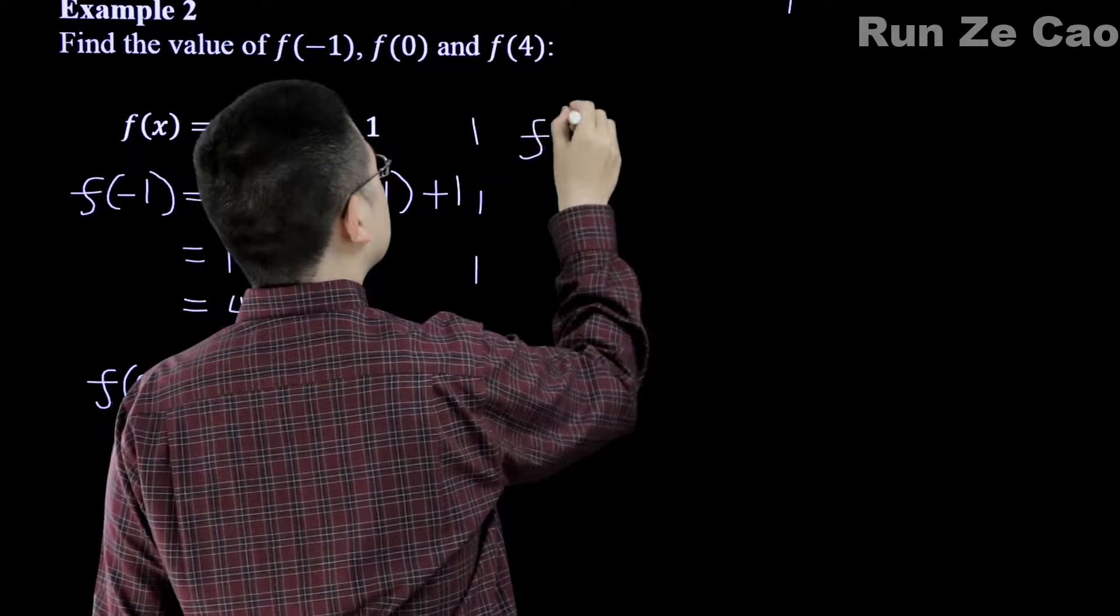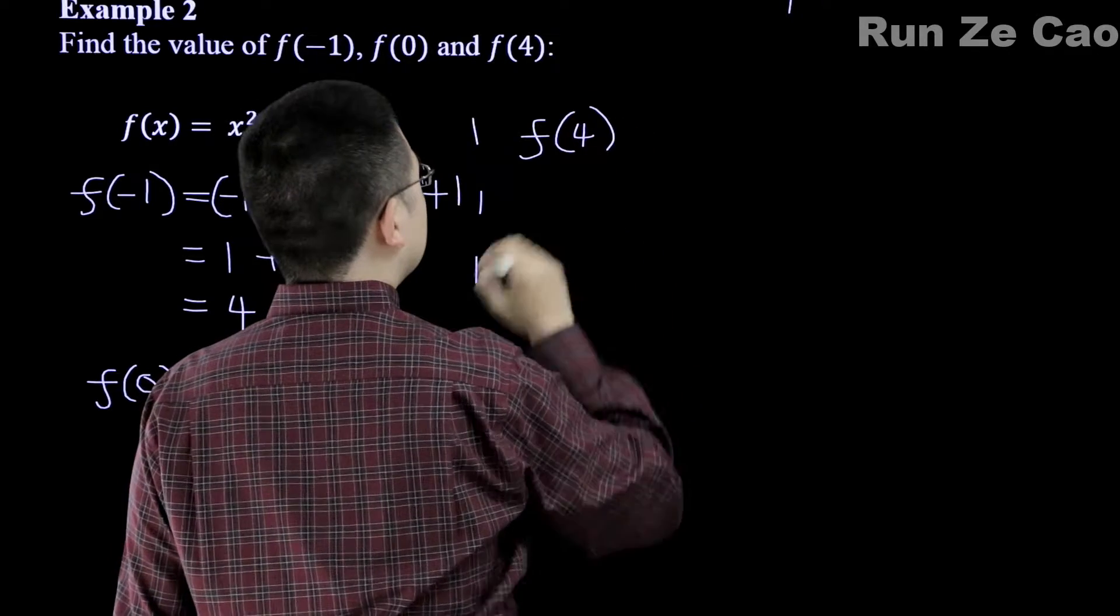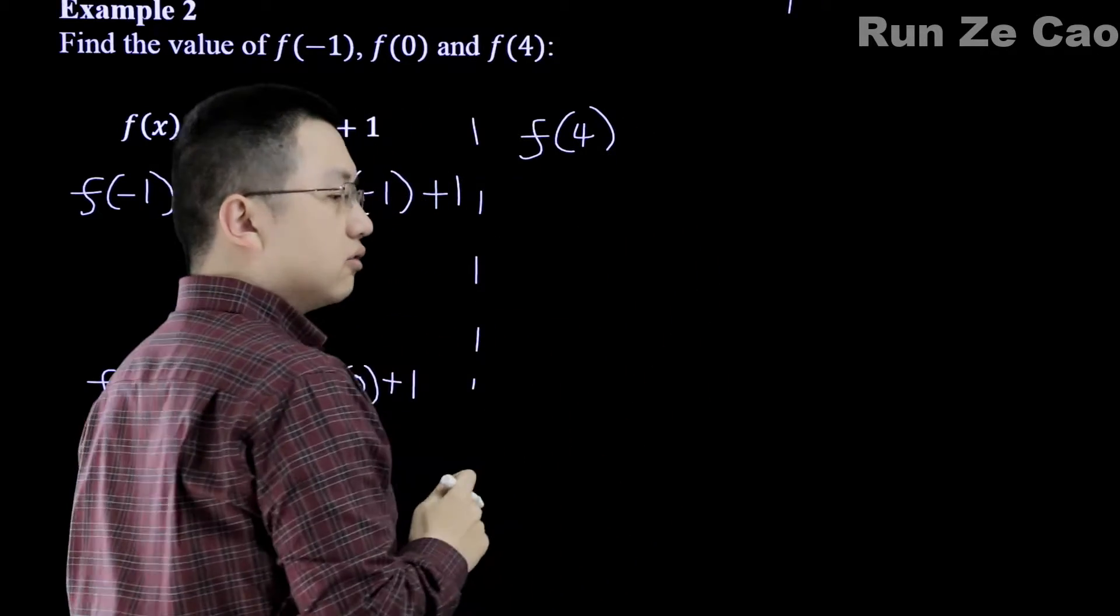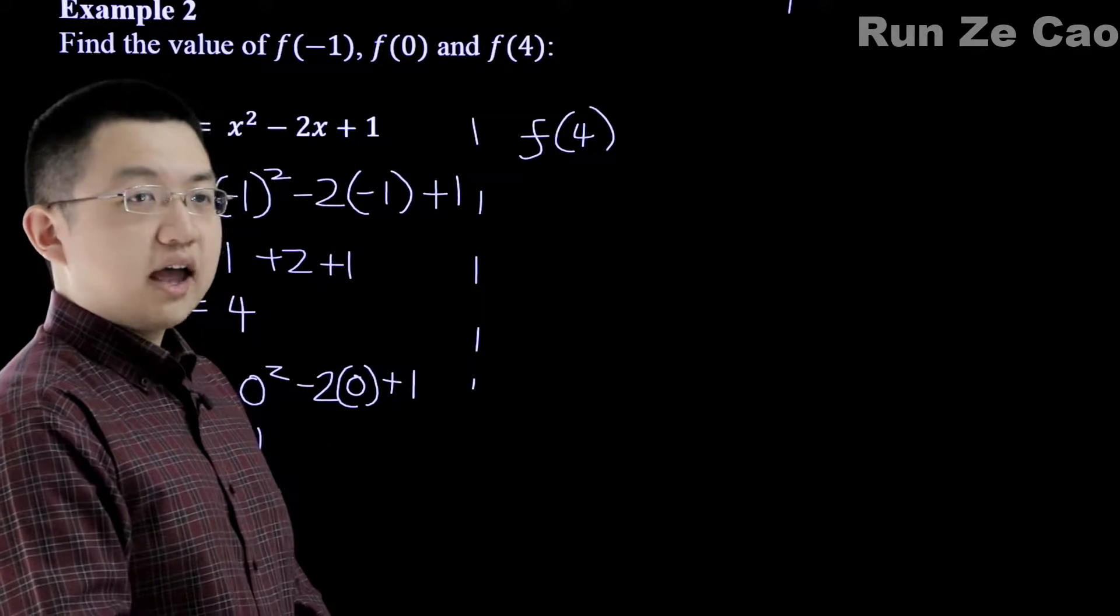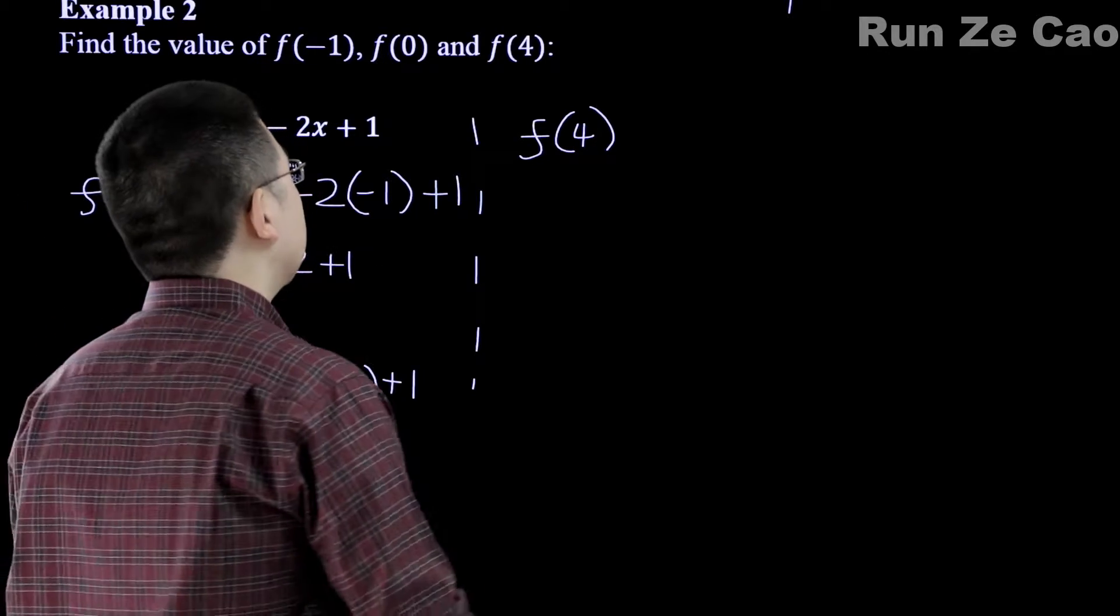So f(0) is equal to 0 squared minus 2 times 0 plus 1, which is going to be 1. Now, f(4), this is not read as f of x, it's called f of x, usually.